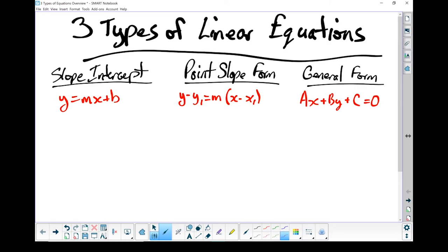Let's start with the first one, slope-intercept form. In this form, you've got your m, which is your slope, and you've got your b, which is your y-intercept. I find this one to be the simplest to work with.